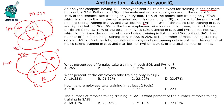6 percent of total employees — that is 27 — take training in all three tools, of which two-thirds are female. So 18 females and 9 males take training in all three tools. 10 percent of total employees — 45 — take training in SAS and Python but not SQL. Since 25 males are already filled in, the females in that region are 20. This is 5 times the number of males taking Python and SQL but not SAS, so that region is 9.